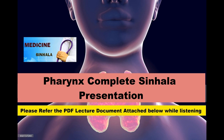Waldeyer's lymphatic ring consists of the nasopharyngeal tonsil (adenoids), the tubal tonsils, the palatine tonsils, and finally the lingual tonsil.